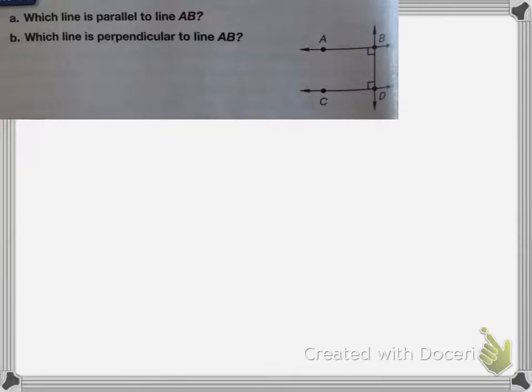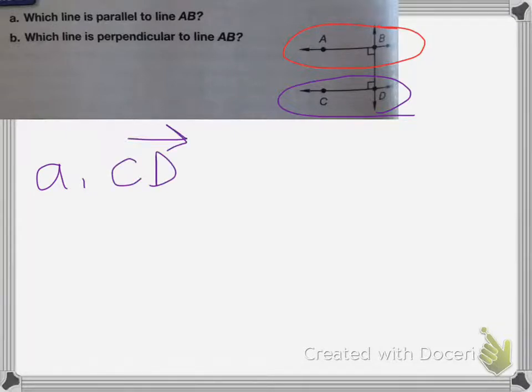So here we have another shape, or another plane. And it asks which line is parallel to line AB. So line AB is up here. That's line AB. And parallel means that they will never cross. The two lines will never cross, because they're exactly parallel. So the line that is exactly parallel to AB is line CD. So the answer to A is CD, and then make sure to make it a line on top.